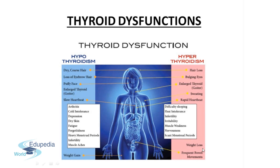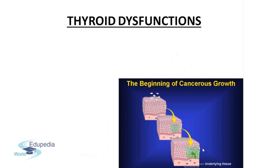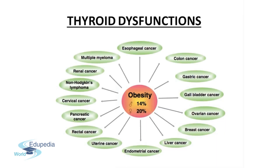Cancers may develop due to exposure to low amounts of food pollutants over a long period of time. Because of thyroid dysfunctioning, cancerous growth may also take place and spread to underlying tissues. Thyroid dysfunctioning may lead to obesity, and various cancers may develop because of obesity, including esophageal cancer, colon cancer, gastric cancer, gallbladder cancer, ovarian cancer, breast cancer, and liver cancer. These are the various kinds of cancer that may come up because of weight gain due to thyroid dysfunctioning.